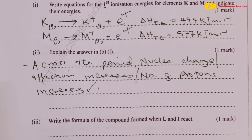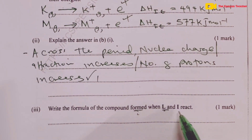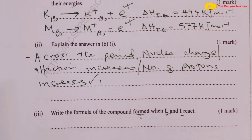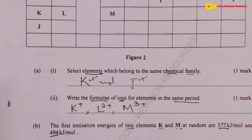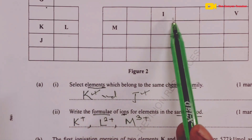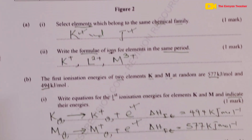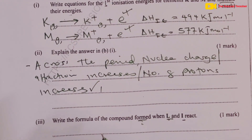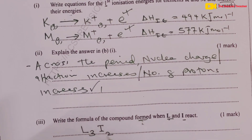Moving to Part 3, we are told to write the formula of the compound formed when L and I react, for one mark. From the grid, L is in Group 2, so it has valency 2. I is in Group 5, so it has valency 3. We interchange the valencies to get the formula: L₃I₂.